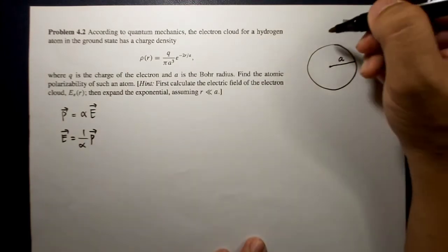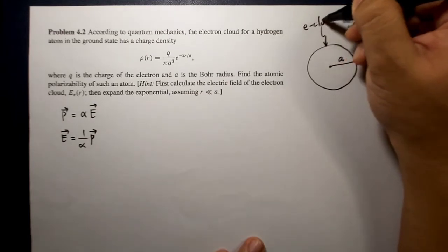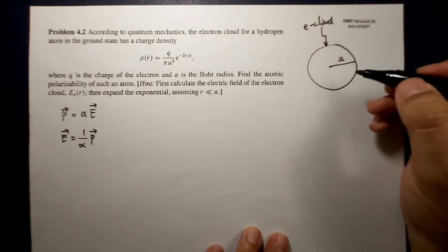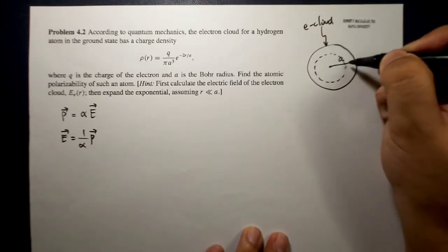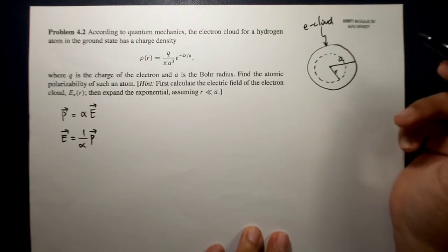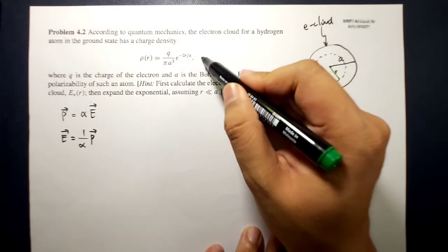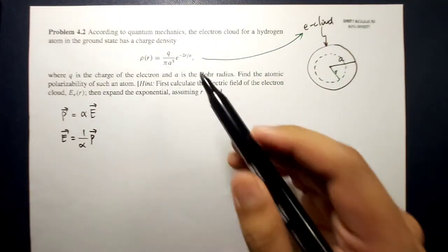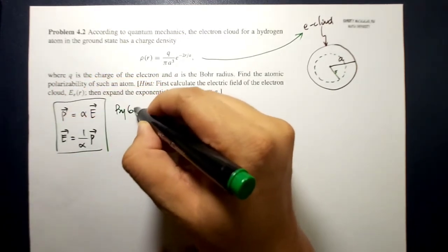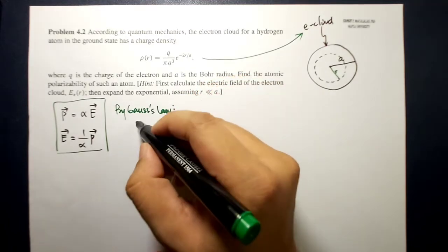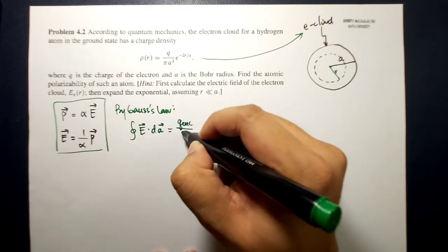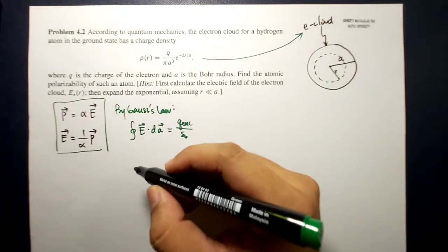So this is your electron cloud, and at the center is where your nucleus and proton are found. If we're going to look at regions inside the atom, we're going to look for the electric field inside this electron cloud. The electron cloud has this charge density. So by Gauss's law, we have the closing integral of E dot dA equal to Q enclosed over epsilon naught. First, let's compute for the Q enclosed.